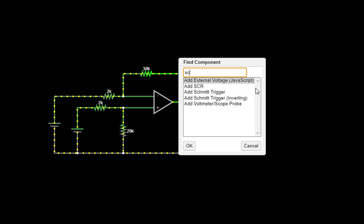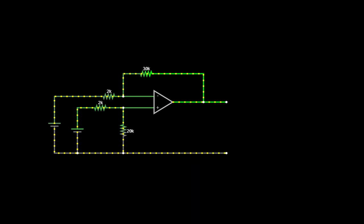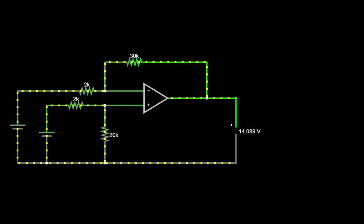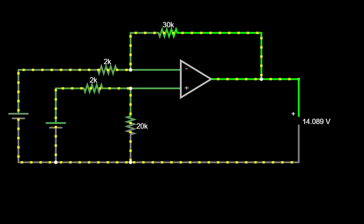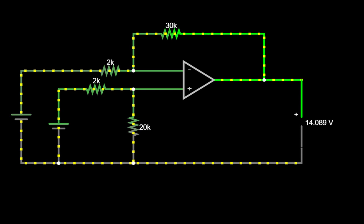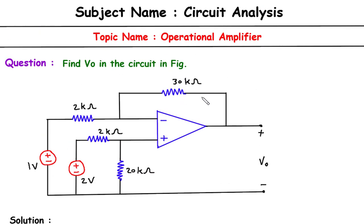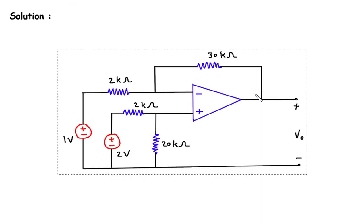We will add a scope here and check the value of this output. It is 14.089 volts — this is the answer we are getting from the simulator for this op-amp circuit. Now we will solve the problem analytically.